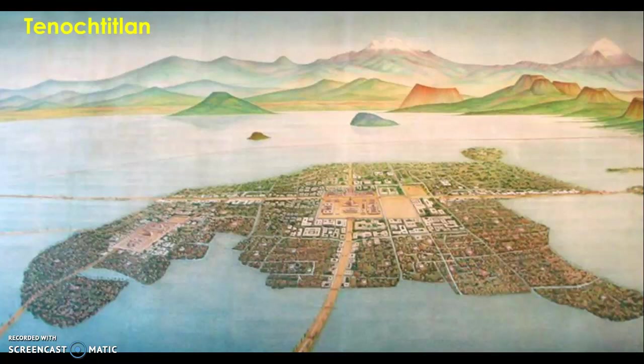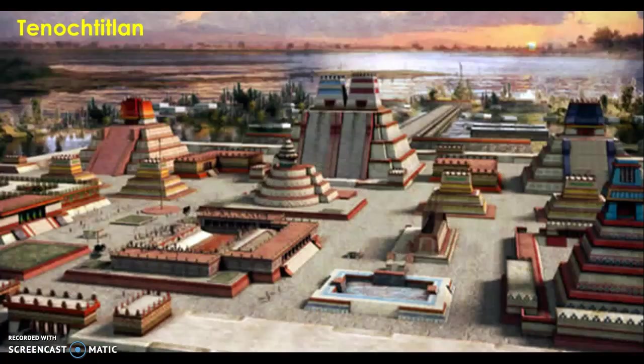Here is an artist's impression of what Tenochtitlan used to look like. Their pyramids, like the Mayans', had stairs — not like Egyptian pyramids. However, you won't see Aztec pyramids on the SOL because the Aztecs were not famous for their pyramids; only the Mayans were. The Aztec pyramids were made out of gold, which would become a huge problem when the Spanish arrived and wiped them out for their gold.